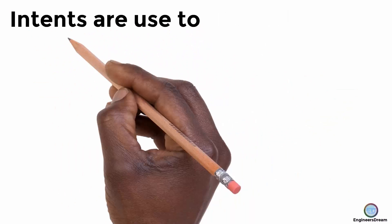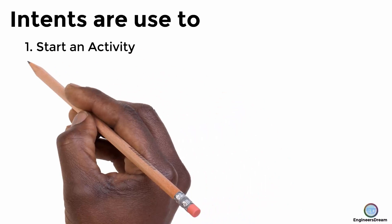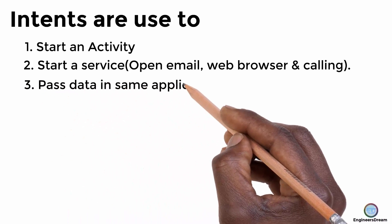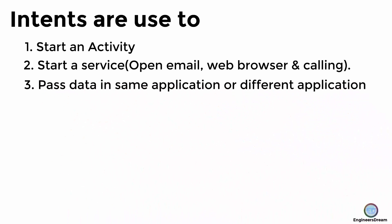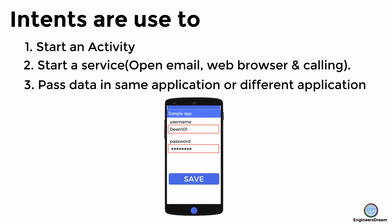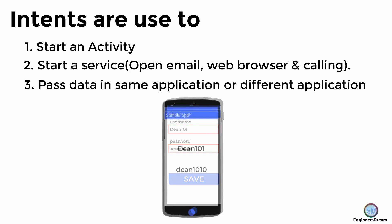Intents are basically used to start an activity. Intents are also used to start a service. Intents are also used to pass data from one activity to another activity inside the same application. As you can see here, if the user types a username and password inside the EditText fields, then on the press of a button this data will be stored and passed to the next activity and displayed there — all using intents.